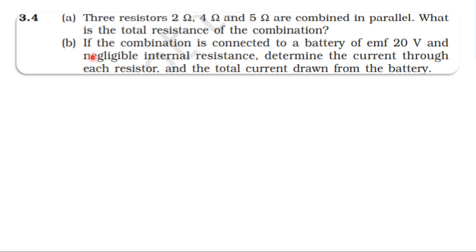From the NCERT textbook, from the topic current electricity, exercise 3.4: Three resistors 2 ohm, 4 ohm and 5 ohm are combined in parallel. What is the total resistance of the combination? Second, if the combination is connected to a battery of EMF 20 volt and negligible internal resistance, determine the current through each resistor and the total current drawn from the battery.